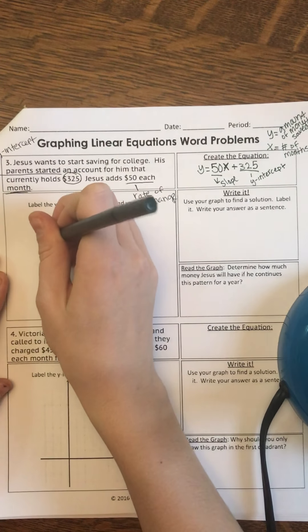So now I'm going to plug in 12 for X. So I get Y equals 50 times 12 plus 325. And then once I solve this, I'm going to figure out how much money Jesus will have. Well, 50 times 10 is 500. So 50 times 12 is 600 plus 325.